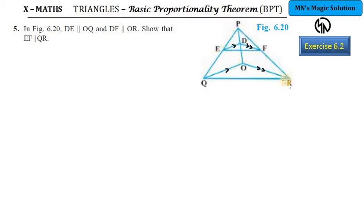Where you have to prove that these two lines are parallel, what you do is show that the ratios are equal — that is, PE by EQ equals PF by FR. In that case, as the ratios are the same, therefore the line EF should be parallel to the base QR — by converse of BPT you can mention this.